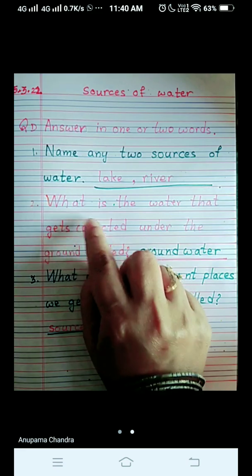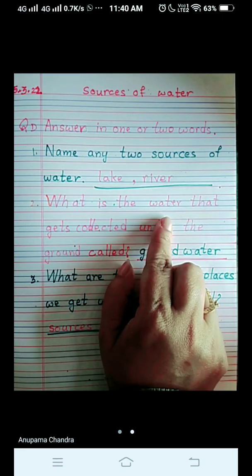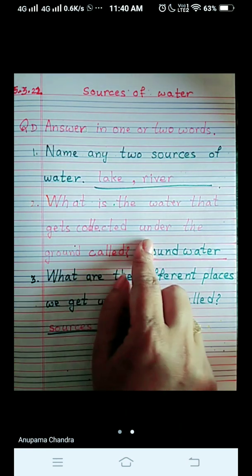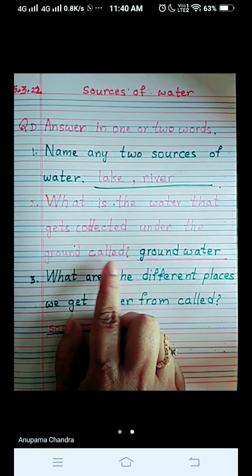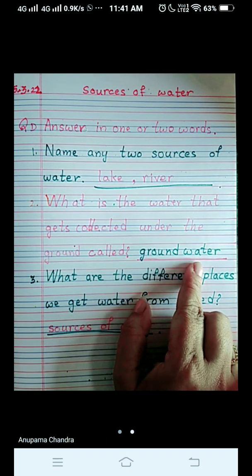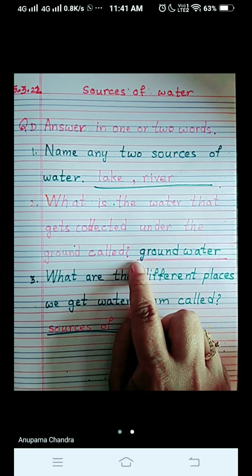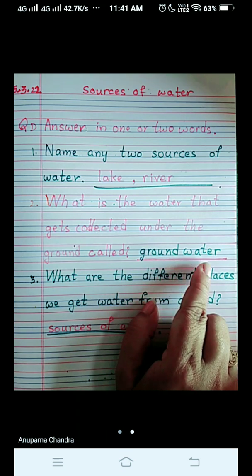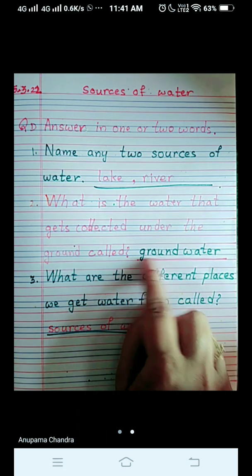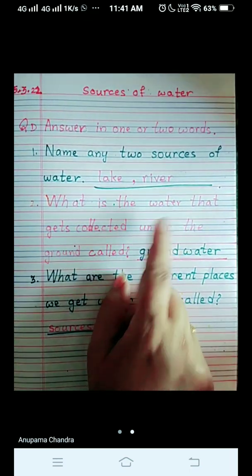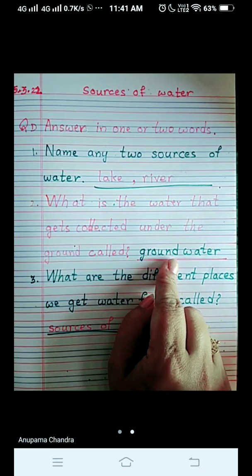Question number two. What is the water that gets collected under the ground called? And it is called ground water. Check out the spelling again. G-R-O-U-N-D ground, W-A-T-E-R water. This you are going to get in the question itself, ground water. So if you want you can see from here and write it down.